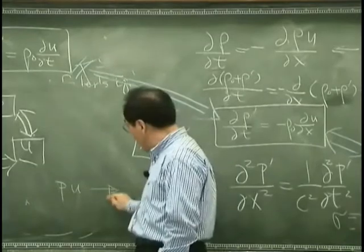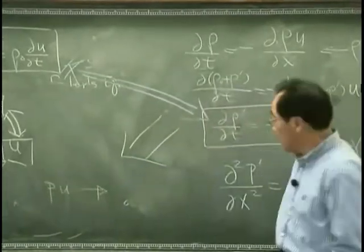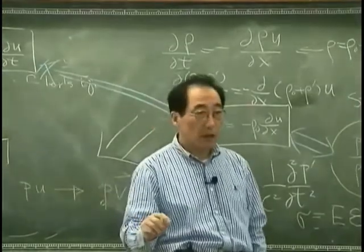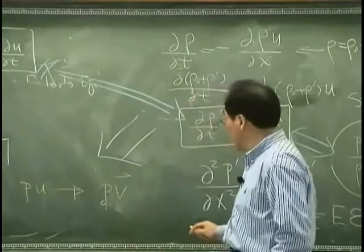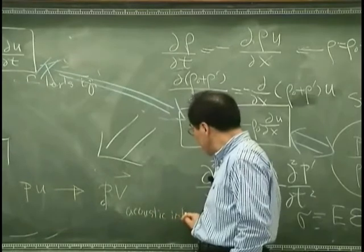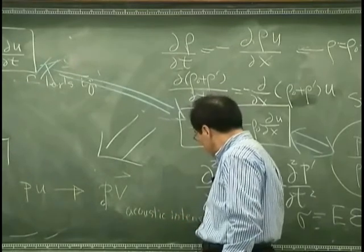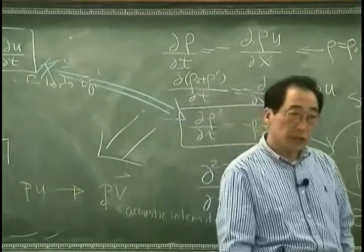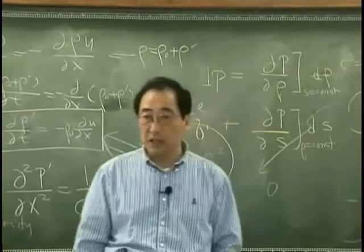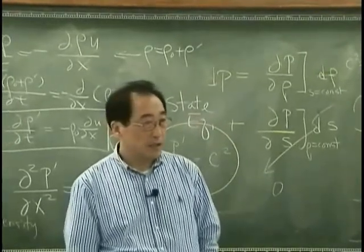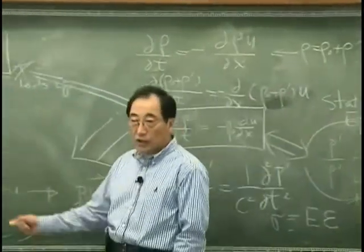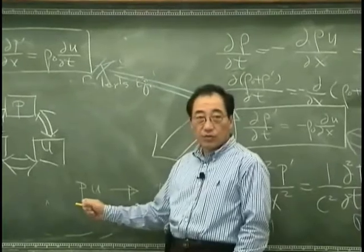So if we have a three-dimensional case, then this has to be P multiplied by velocity vector—P times V—that we call acoustic intensity. Acoustic intensity is no longer a scalar quantity, but it is a vector quantity, that is the multiplication of P with U vector.